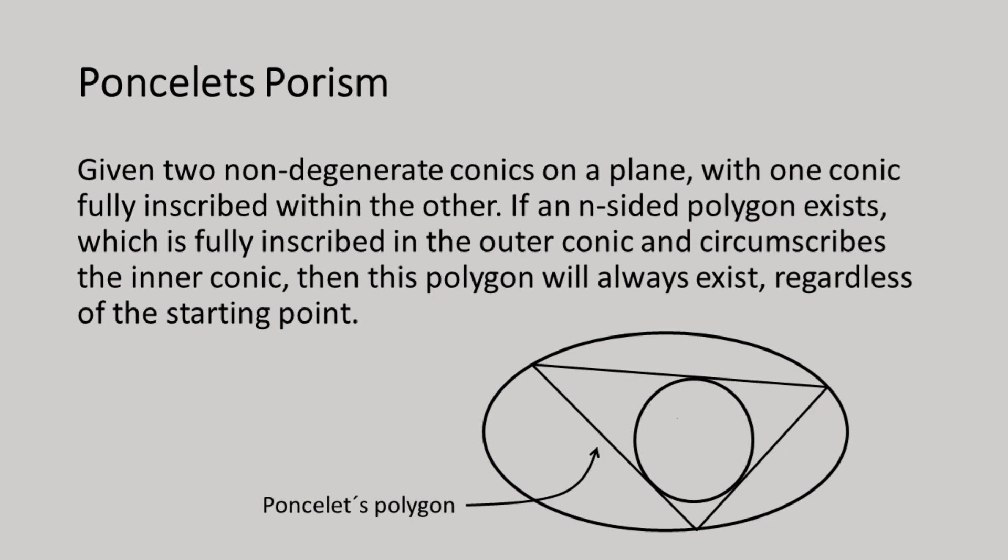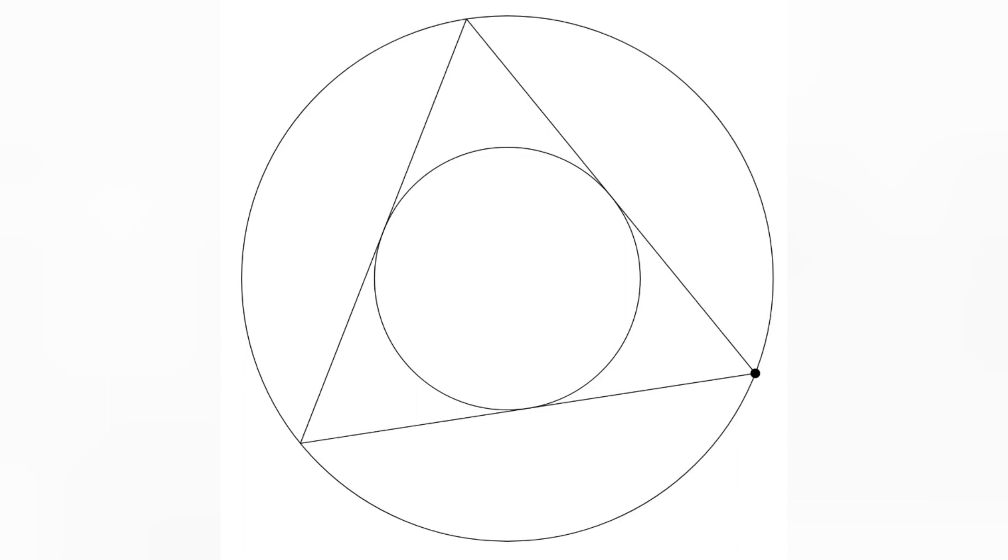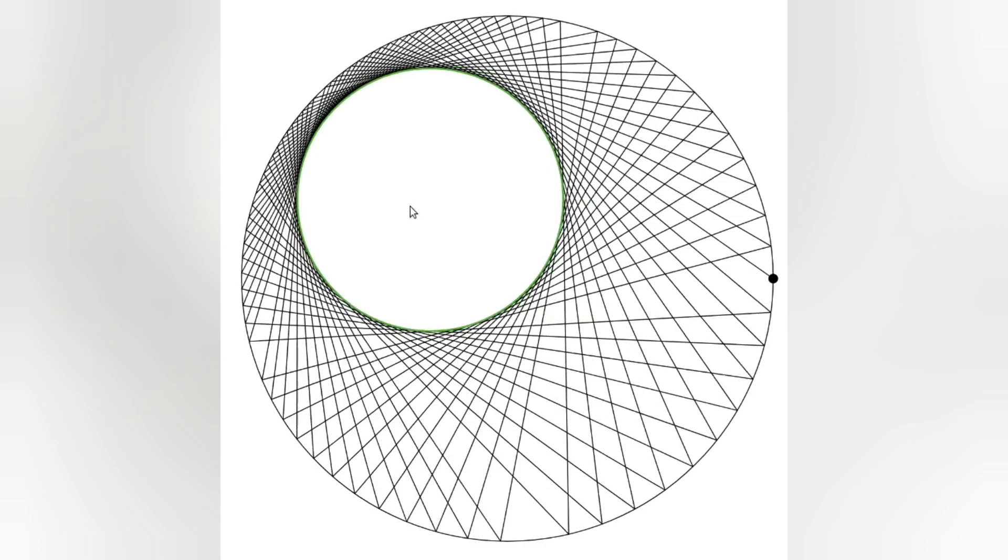If no such polygon exists, then the lines will continue bouncing around. To illustrate this with a visualization, it clearly shows how Poncelet's Porism functions. Starting with the simple example of a triangle, we can see that the three-sided polygon rotates within the two conics but remains the same shape despite the changing of the starting point.